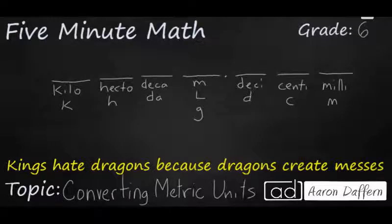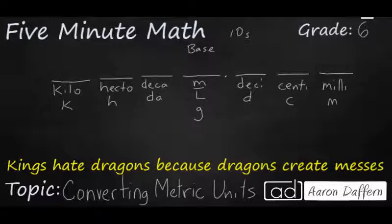When we're dealing with the metric system, everything within it is based on tens, so it's going to look very much like our place value system. We have different prefixes for different place values. The base represents the ones place, and it's going to be meters, liters, or grams.